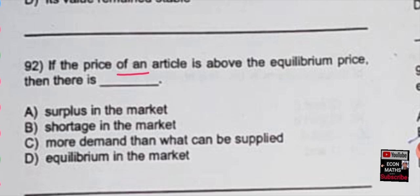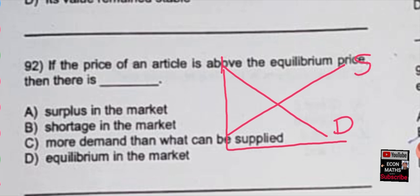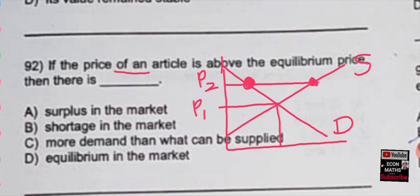The next question: if the price of an article is above the equilibrium price, then there is — the options are surplus in the market, shortage in the market, more demand than can be supplied, or equilibrium in the market. Looking at the demand and supply graph, if price is above equilibrium at P2, demand is less and supply is more, so there is a surplus in the market. The correct option is option A.